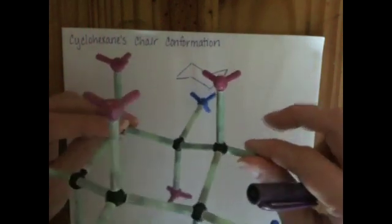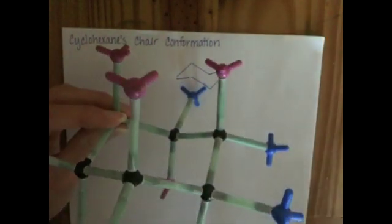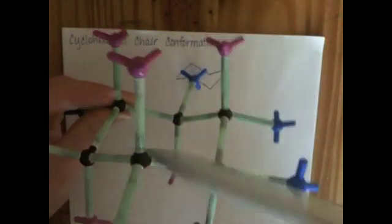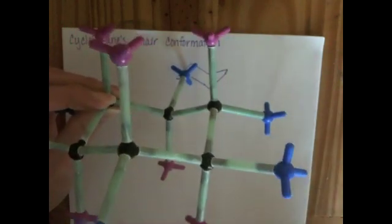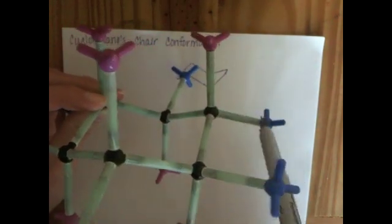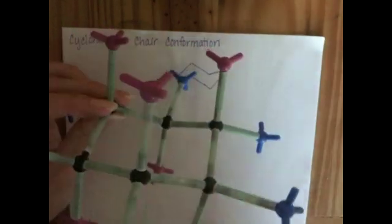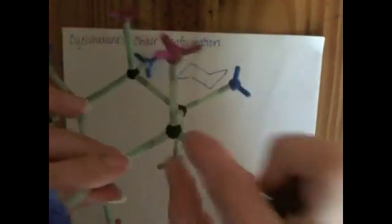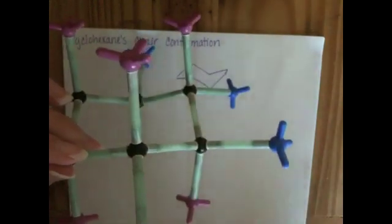So the cyclohexane takes on this really interesting pattern of alternating straight up, straight down, straight up, straight down, straight up, straight down as it goes around the ring. And it has angled down, angled up, angled down, angled up, angled down, angled up as it goes around the ring.